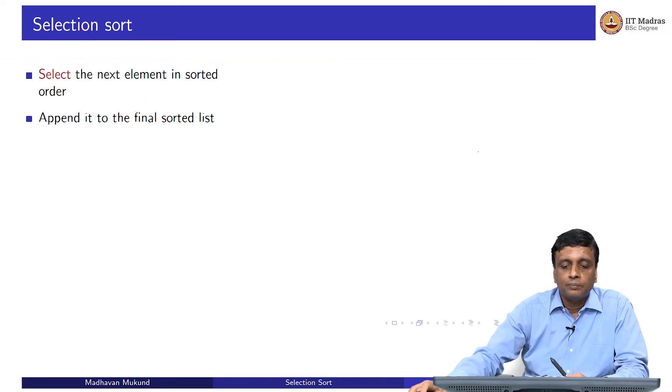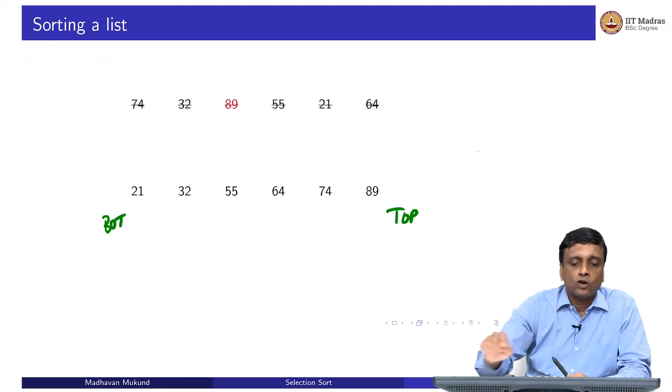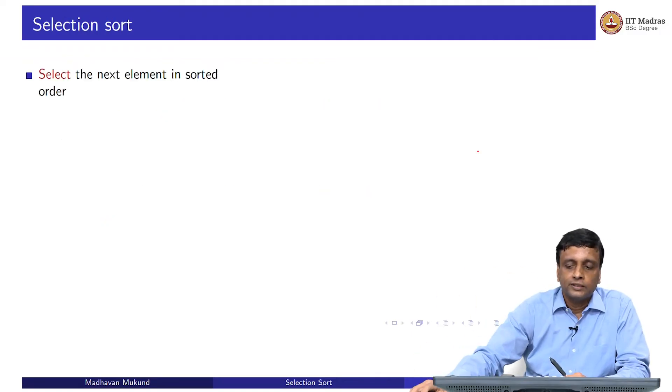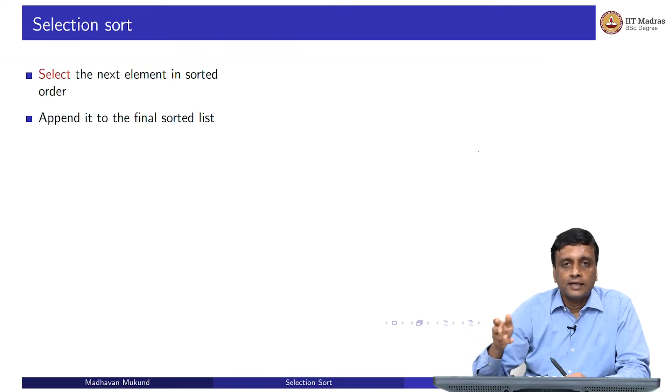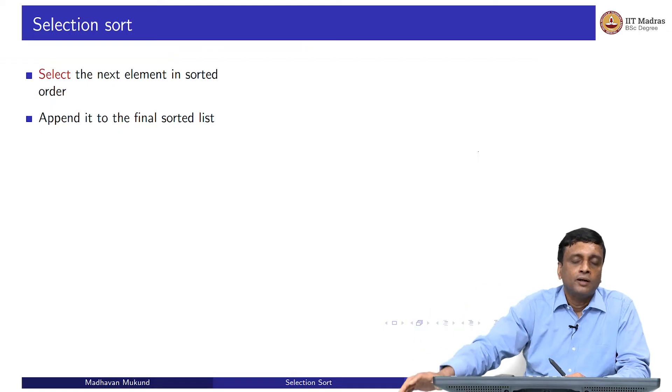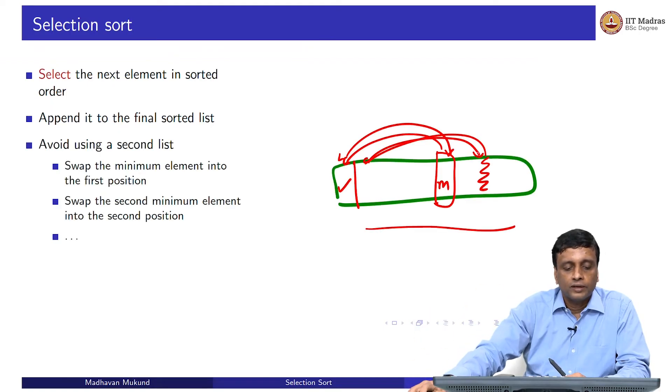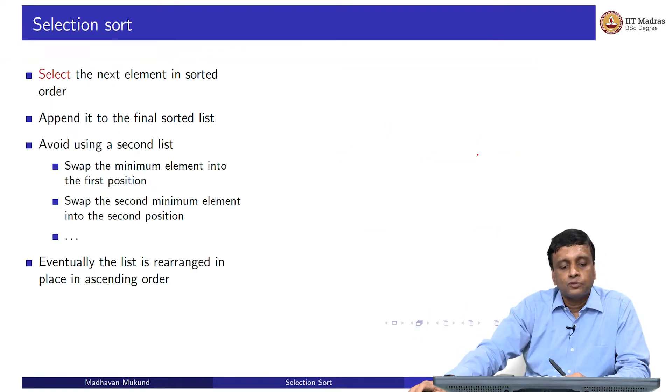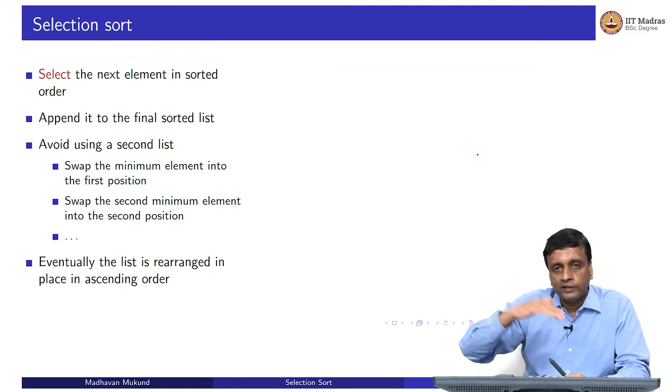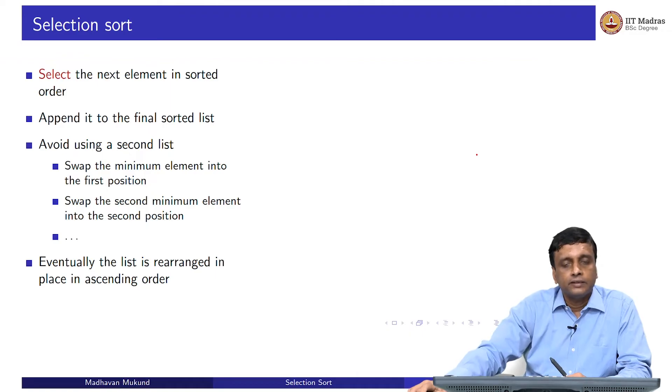This makes it possible for me to do this strategy without creating a new list. Because remember in the previous example, as I move things I cross them out, they were no longer there. Here the crossing out corresponds to saying that they are moved into position and now their position has been taken by some value which I have not seen before. Eventually this list will be rearranged. If I keep moving the minimum to the beginning of each segment, I will rearrange it in ascending order.